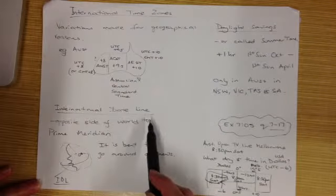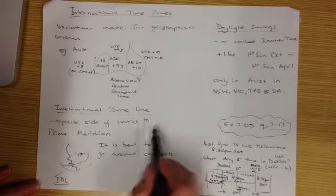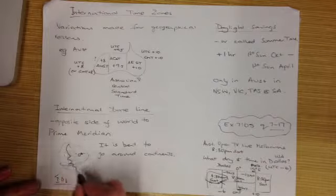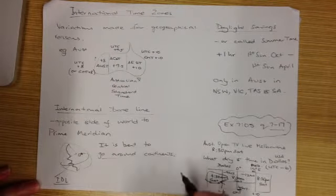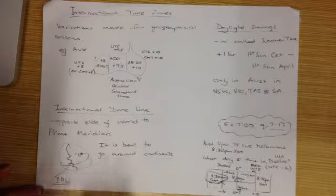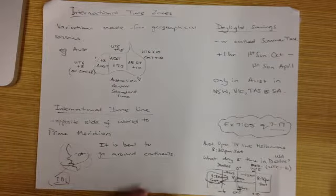As we talked about, the international dateline sits on exactly the other side of the world to the prime meridian, and it's not straight, it's not a straight line, it's not a meridian of longitude because it's bent to go around the continents or countries. It's often referred to as the IDL or the international dateline.